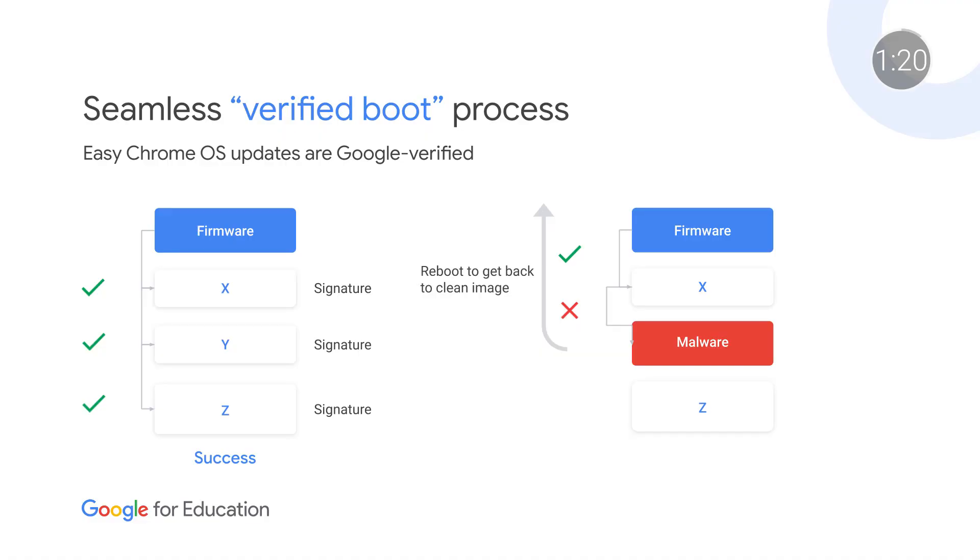Every time you boot up a Chromebook, it runs a self-check to find and repair system corruptions and perform what's called a verified boot, that checks everything to confirm that the software and OS are secure and stable. If a problem is detected, the Chromebook will go into recovery mode and walk you through the update process. Chrome wasn't the first computer operating system, but it was the first one designed for shared devices — perfect for school environments where multiple students can use the same devices, each with their own individual profiles and personal sandbox that's partitioned off from the other users and from the Chrome operating system itself.